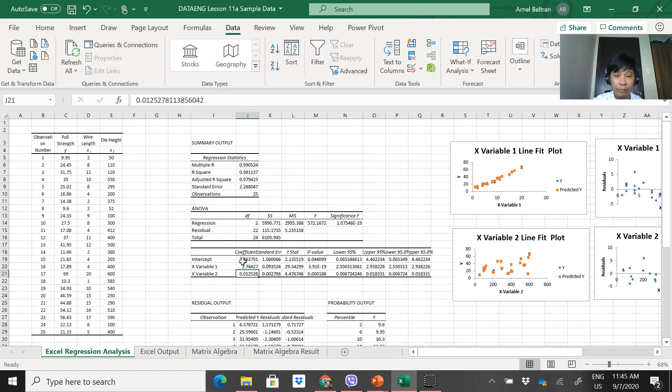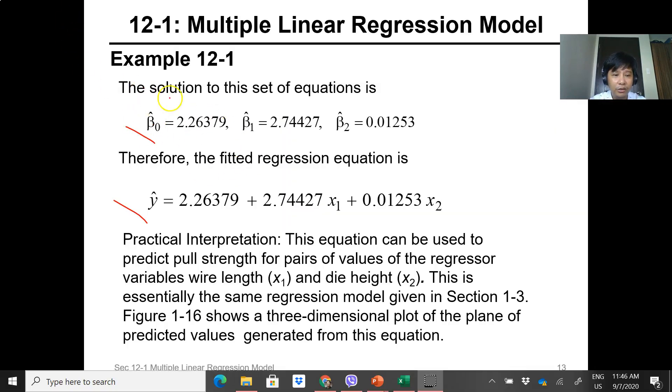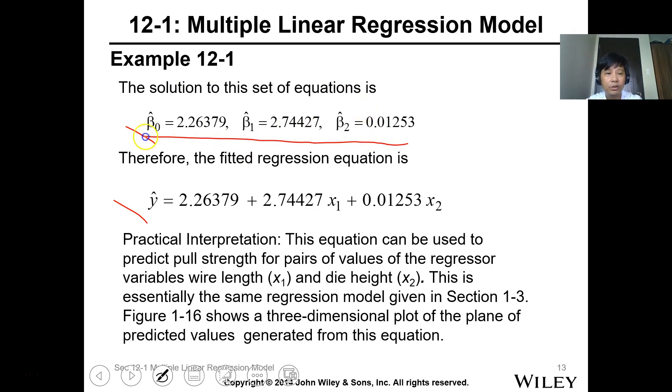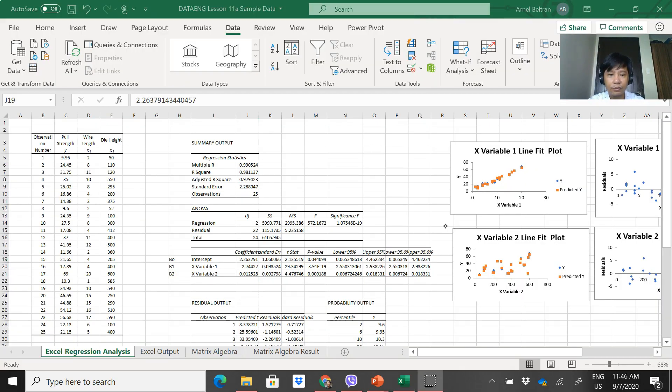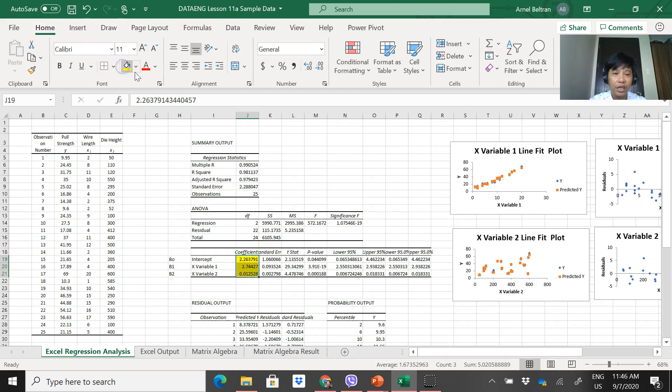So here, you can see the intercept. Basically, this is beta, the coefficient. So this is beta 0, this is beta 0. This is beta 1, this is beta 2. So meaning, this is the coefficient for the variable. And the information here. So beta 0, beta 1, and beta 2. So that's the data that you can see. This is just the coefficient information here. That's the coefficient.